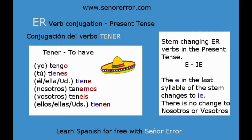Yo TENGO. Tú TIENES. Él, ella, usted TIENE. Nosotros TENEMOS. Vosotros TENÉIS. Ellos, ellas, ustedes TIENEN.